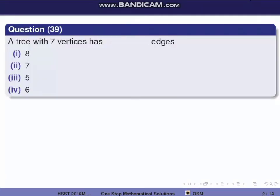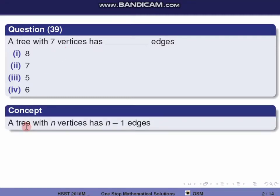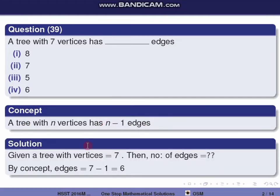First question, question 13: A tree with 7 vertices has how many edges? The concept is: a tree with n vertices has n-1 edges. So a tree with 7 vertices has 7-1 = 6 edges.